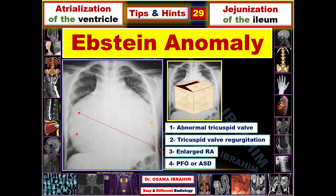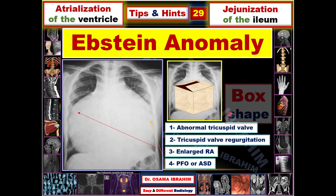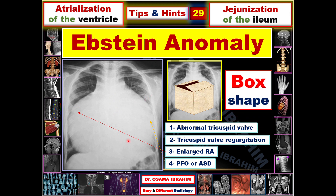This cardiac abnormality makes the heart appear as a box shape due to bulging of the heart from both sides. The box-shaped heart is one of the signs for diagnosing Ebstein anomaly, caused by the abnormal tricuspid valve — in other words, atrialization of the ventricle.